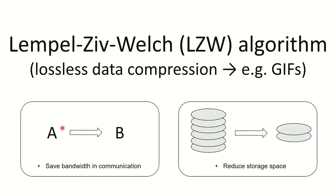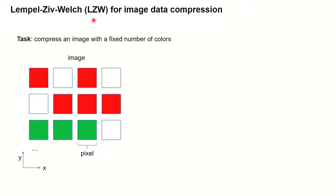Data compression is very important today. For instance in communication, you can save a lot of bandwidth by compressing the data before you send it from one place to the other. And also in data storage, you can save a lot of disk space by compressing the data that you have. I will explain the LZW algorithm.